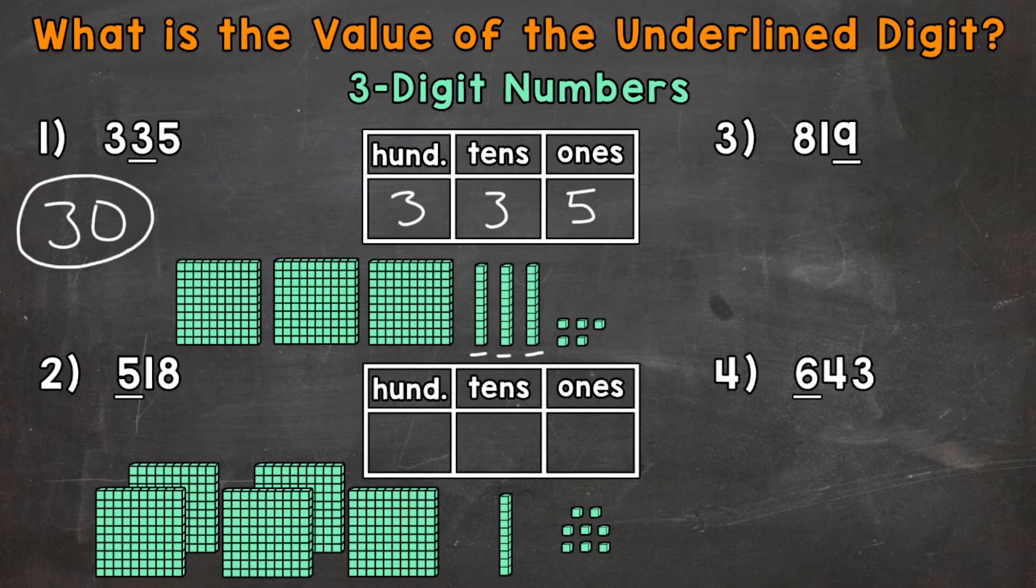Let's move on to number two, where we have 518. We'll write the number in the place value chart to break that number down as well. So again, 518.